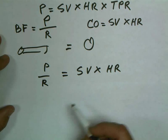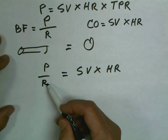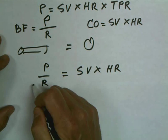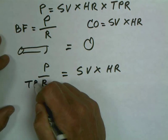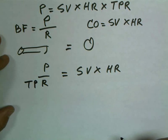We also know that R, the resistance, could also be considered the total peripheral resistance of all blood vessels. So we could say TPR over here instead of just resistance.